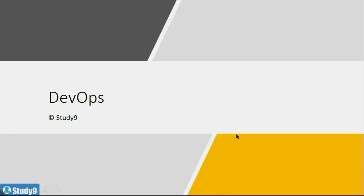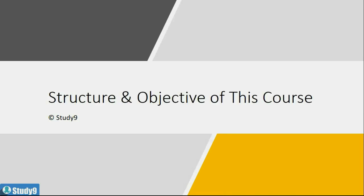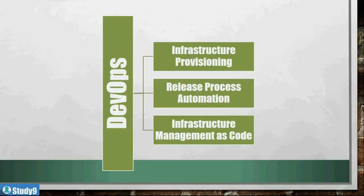Hello and welcome to the DevOps training by Stradinite.com. In this class we are going to discuss the structure and the objective of the DevOps course. This course we have divided into three major parts: first is infrastructure provisioning, then release process automation, and finally infrastructure management as code.